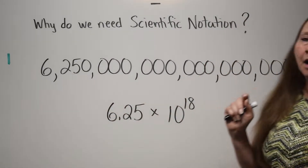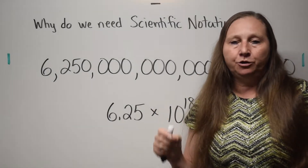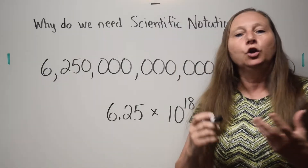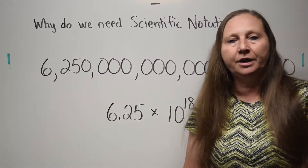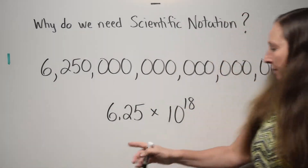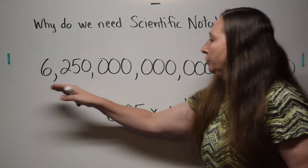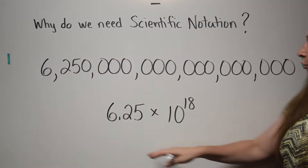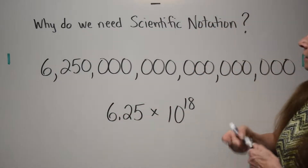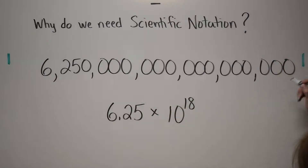This very big number is the number of elementary charges — that could be electrons — in one Coulomb. Look on the front page of your physics reference tables and find this number there. Now, would you rather write out all these zeros, or would you rather write it this way, which is much quicker and easier? Let's convert this decimal number to scientific notation.